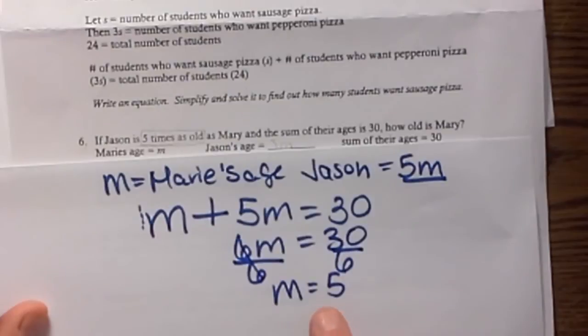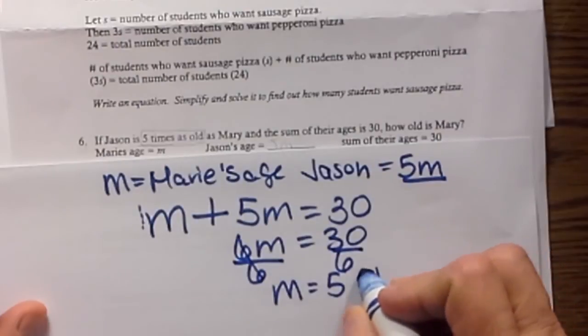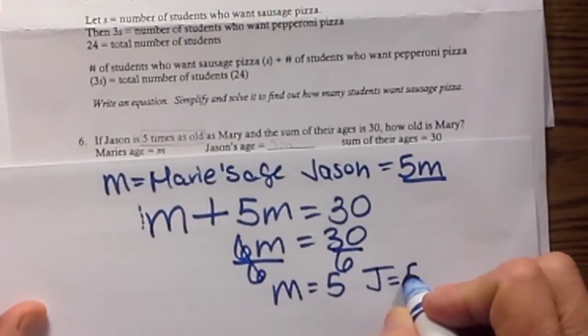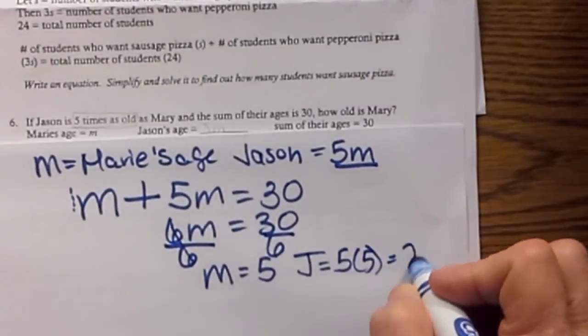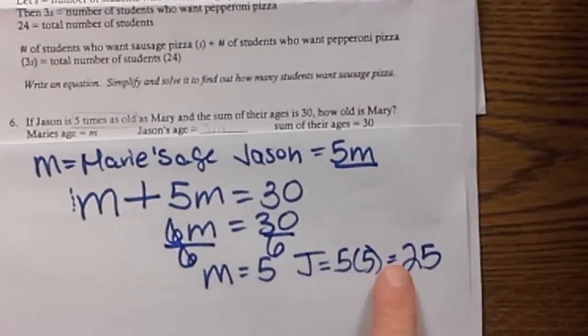Okay, so what does that mean? That means that Mary must be 5 years old. So Jason is equal to 5 times Mary. So he must be 25 years old.